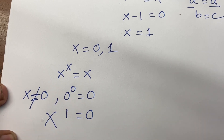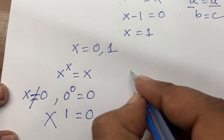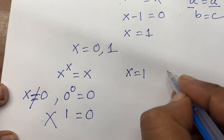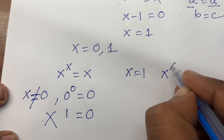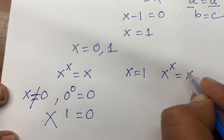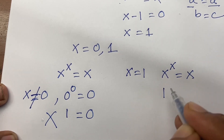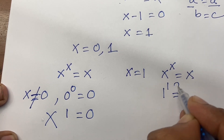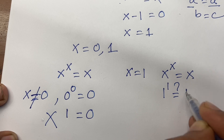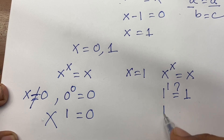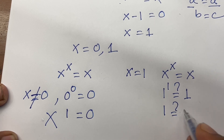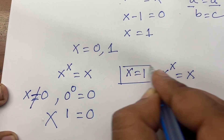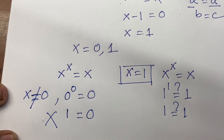In the other case, we found x equal to 1. This time x to the power x equal to x gives 1 to the power 1 equal to 1, so 1 equal to 1. Therefore x equal to 1 is our correct answer.